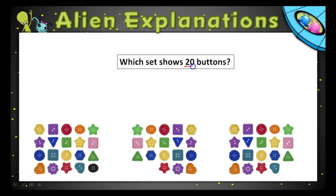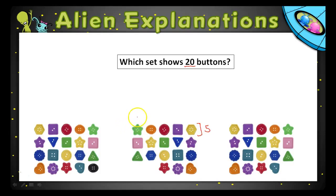You're looking for 20 buttons here, and if you look closely you can see that each row of your answer choices is made up of five buttons — one, two, three, four, five. So we want to break the 20 down by fives.